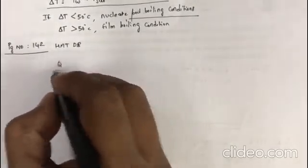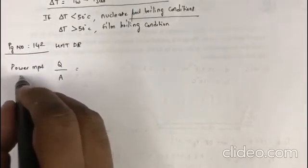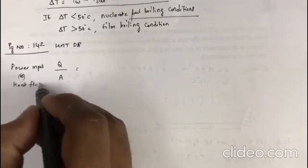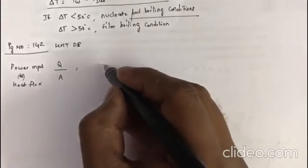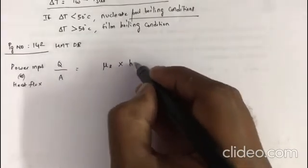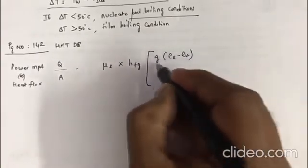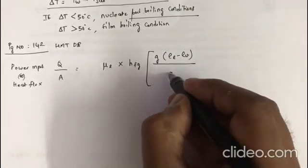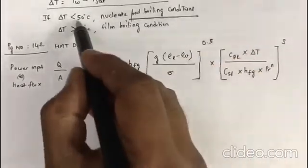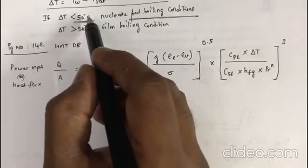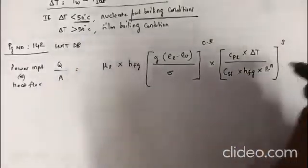So you will see there Q/A, which is heat flux or power input. This equation will be available at page 142. It will be like: Q/A = μl × hfg × [g(ρl - ρv)/σ]^0.5, multiplied by another term. This is only for nucleate pool boiling conditions when the excess temperature is less than 50°C. Please remember there is another equation for film boiling condition in a different page.